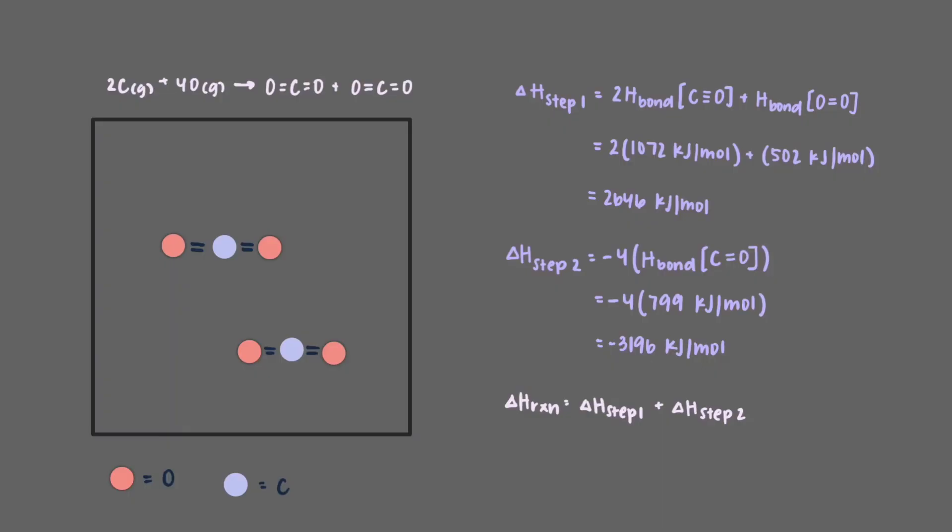When we add these two steps together, we get that the delta H of the reaction is negative 550 kilojoules per mole.